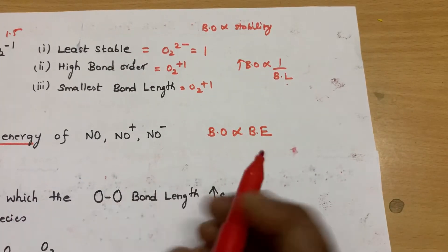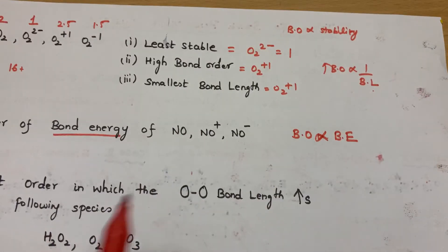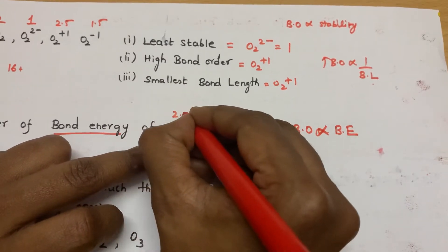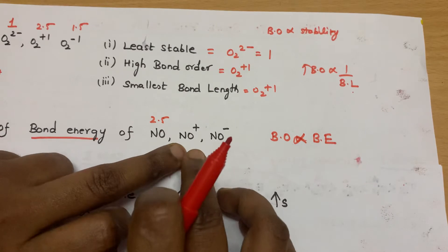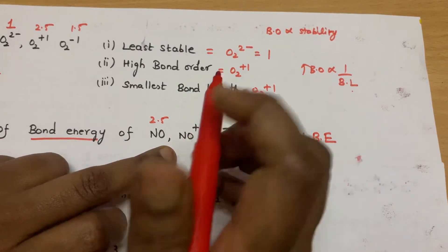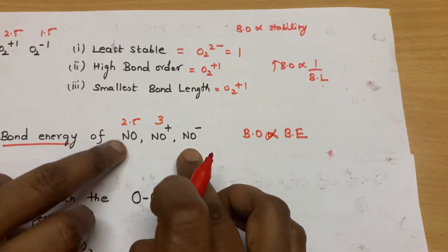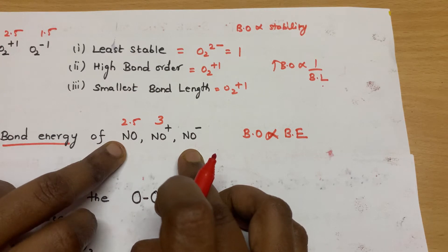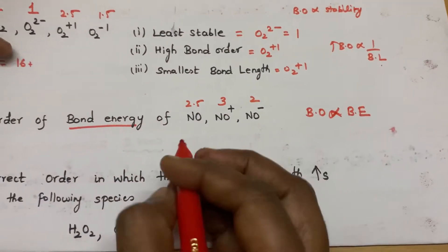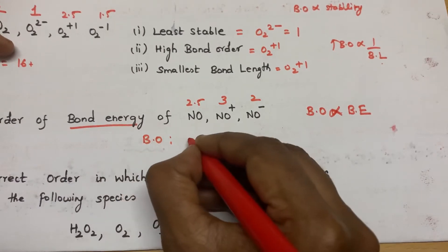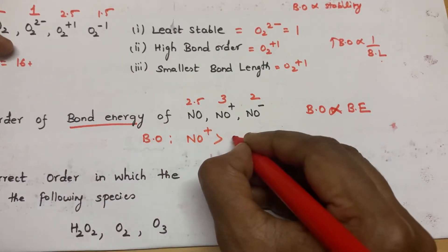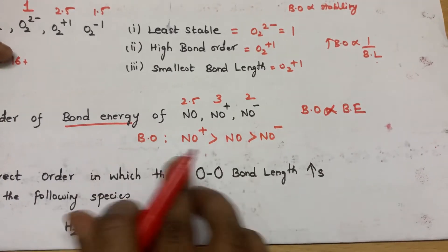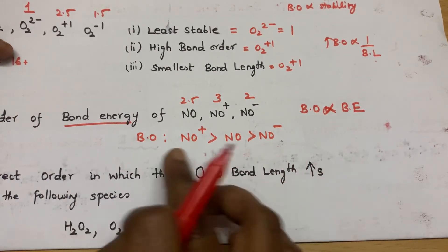More energy is required to break the bond. So first we will see what is the bond order for each species. NO is 2.5. And NO⁺ — if we remove 1 electron, the bond order is 3. And NO⁻ — adding 1 electron gives 16 electrons total, so the bond order is 2. The bond order increases in this order: NO⁻ < NO < NO⁺. Since bond order is directly proportional to bond energy, the bond energy order follows the same sequence.